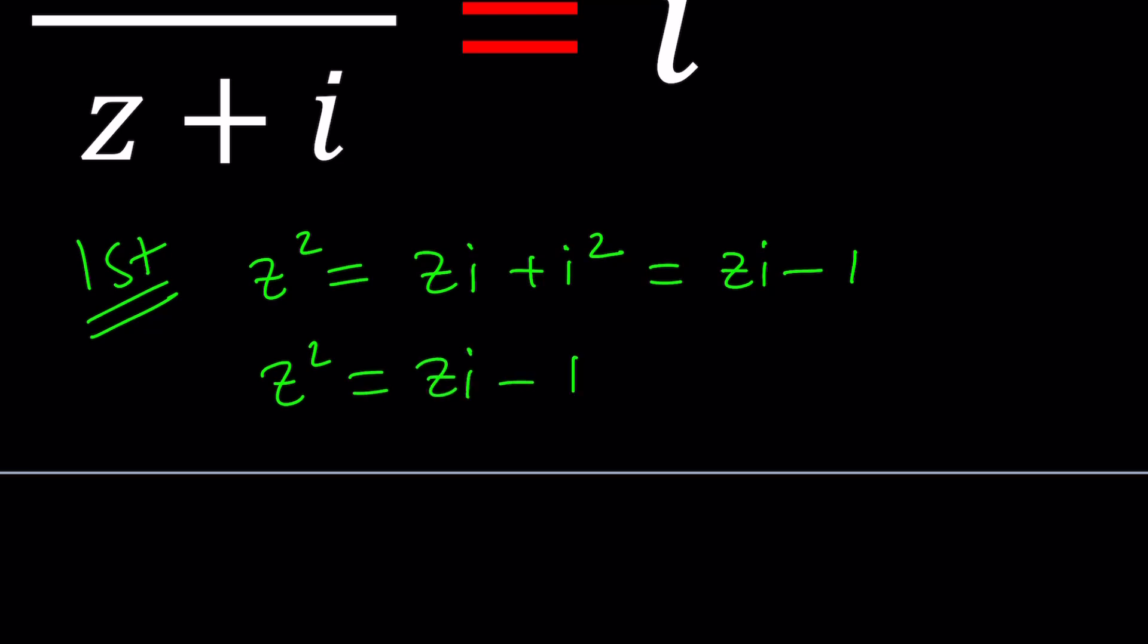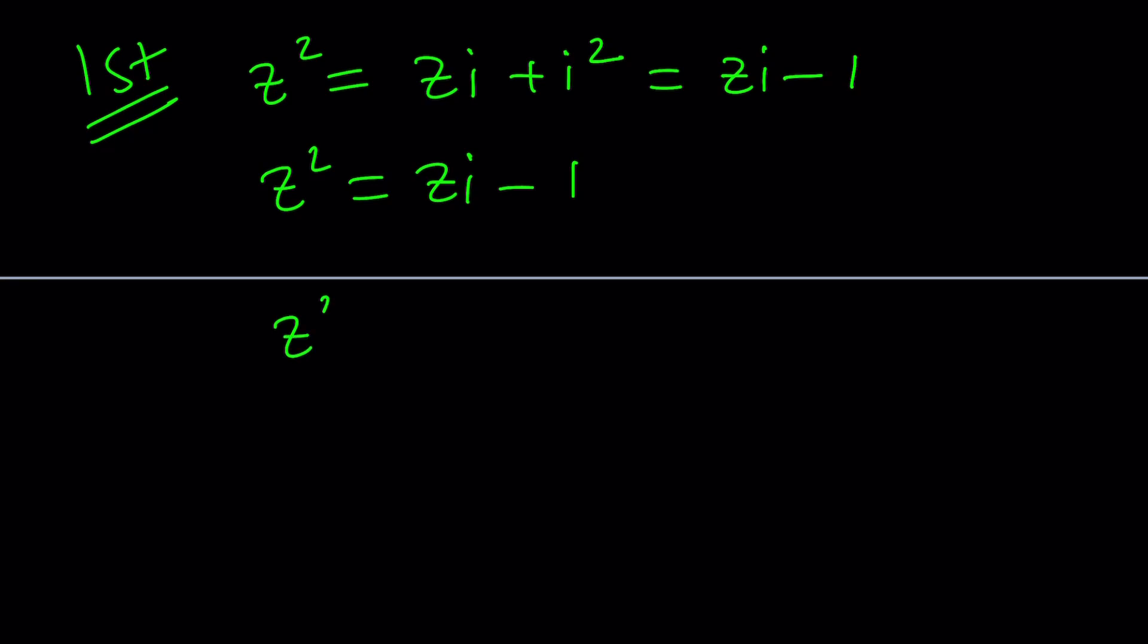And now we can put everything on the same side to make this a quadratic equation and solve it using the quadratic formula, right? What else can we use? Not the cubic formula, right? So the quadratic formula gives us negative b plus minus the square root of b squared, which is i squared, minus 4ac, which is minus 4, divided by 2a.